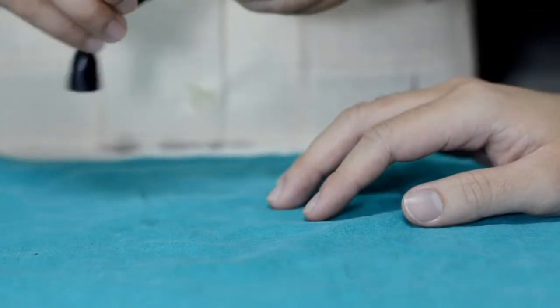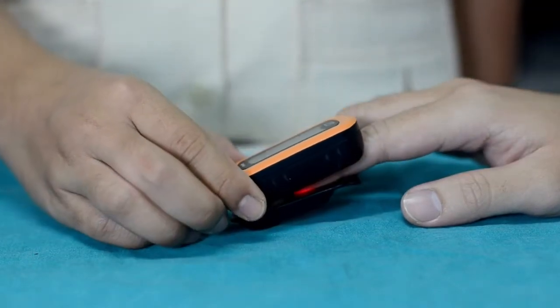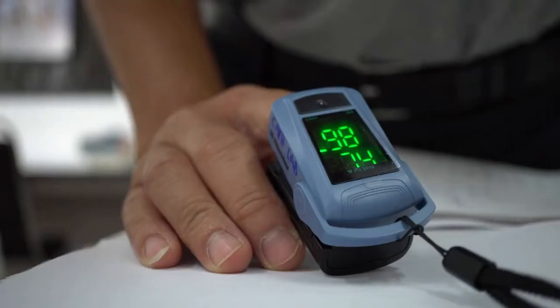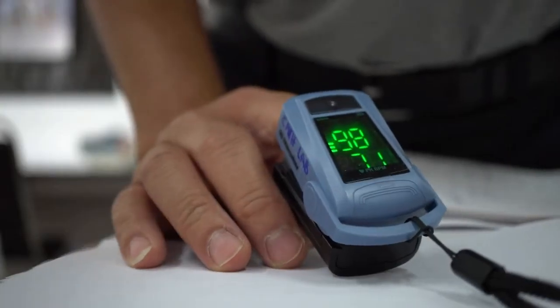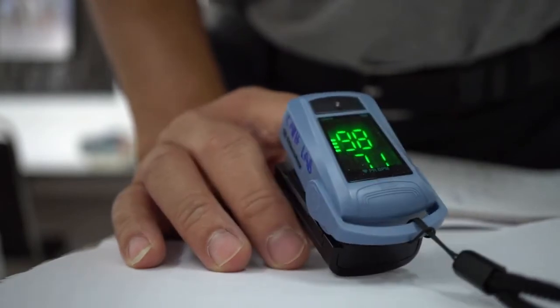It is so small that it can be attached to your fingertip, earlobes, or even your toes to display the accurate saturation of oxygen in your blood. It also displays your heart rate and shows how perfectly your heart is pumping oxygen through your arteries.